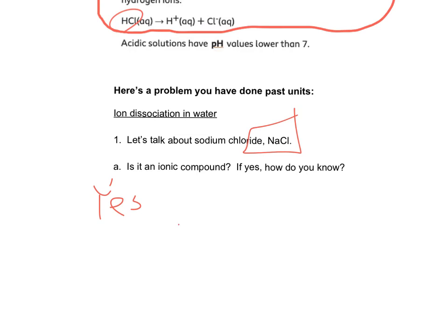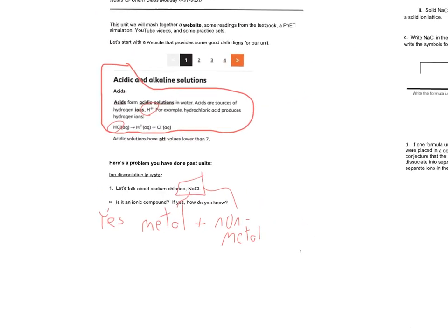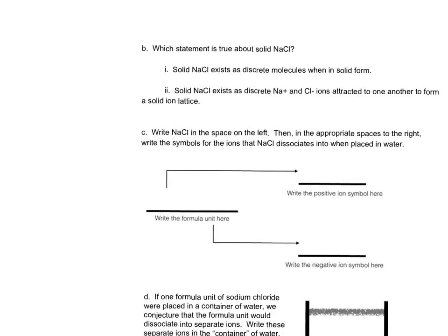And we would say yes, because it's formed from a metal and a nonmetal. And I'm going to be very crude in my notating, but it's a metal plus a nonmetal, with the sodium being the metal coming from the left side of the periodic table, and the chlorine, the nonmetal from the right side of the periodic table. Great. It's page one, and I think we're doing pretty well in time.